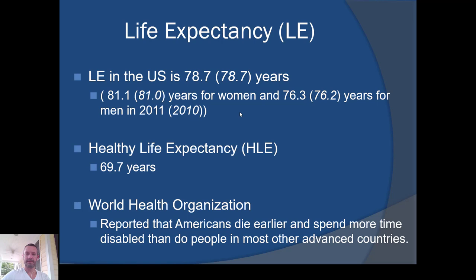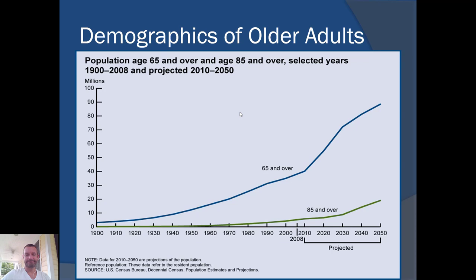If we just look over the last hundred or so years, you can see the number of older adults over age 65 has rapidly been increasing, especially within the last 20 years. You can also see an increase in the number of older adults that are over age 85.